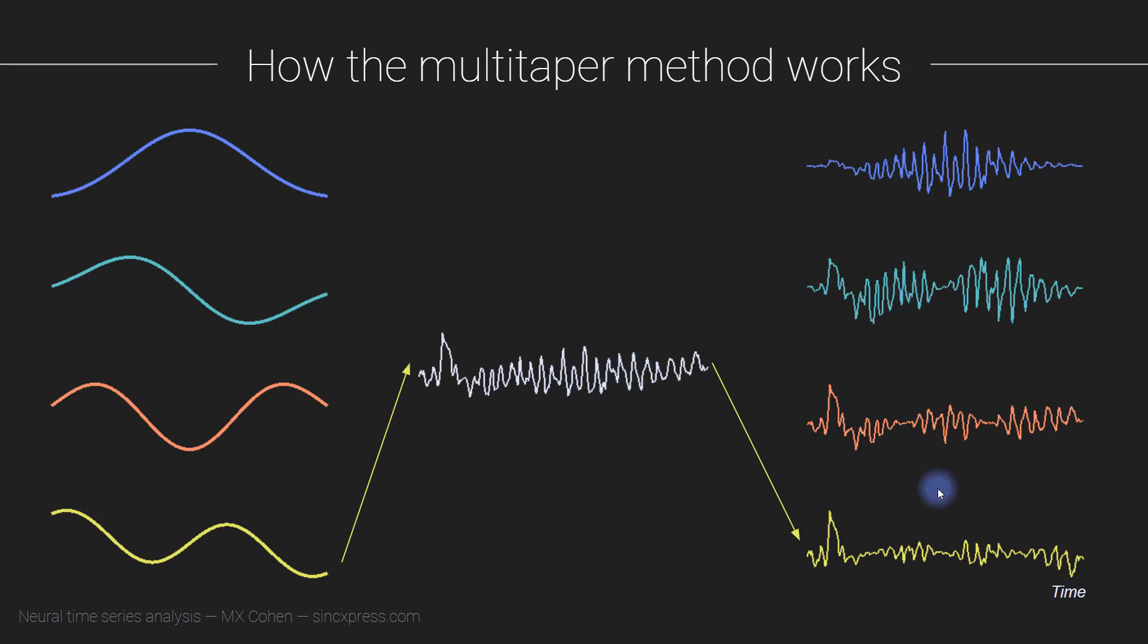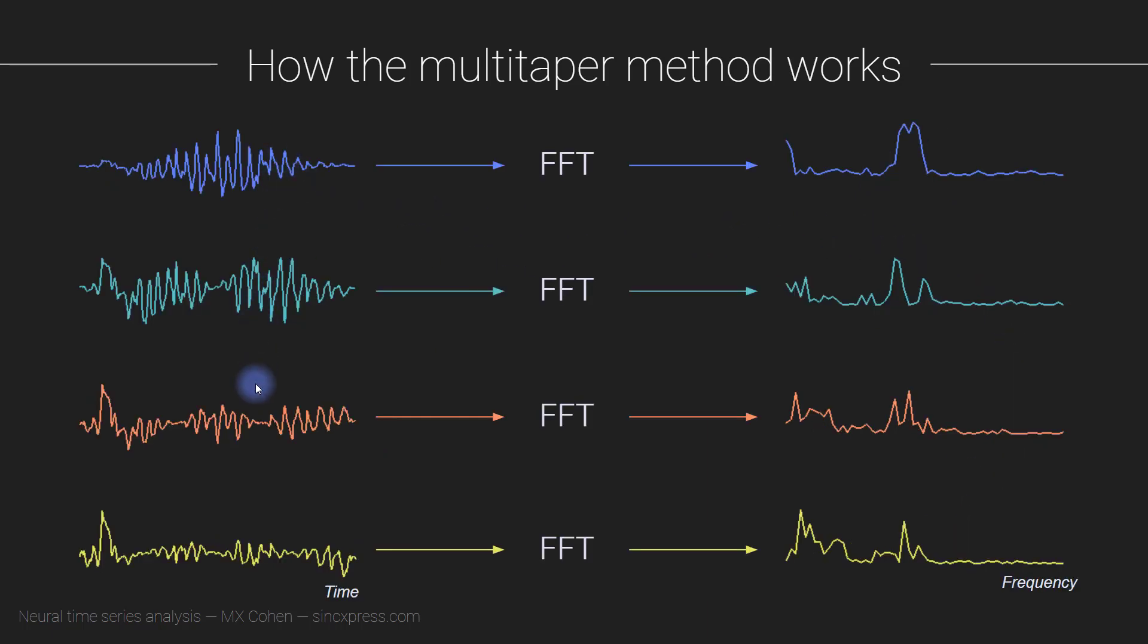So now these four time series are going to appear on the left over here. And now what you do is you take the Fourier transform from each of these individual tapered time series, and then extract power, that gives you four different power spectra.